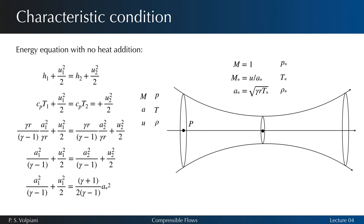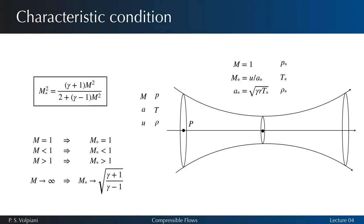Dividing both sides of the last expression by u1 squared, we obtain the relation linking M and M star. We note that if M equals 1, then M star equals 1. If M is less than 1, M star is less than 1, and the opposite holds.